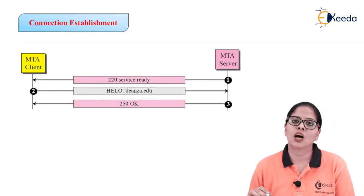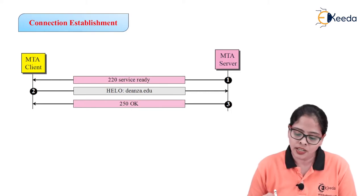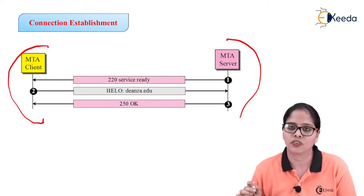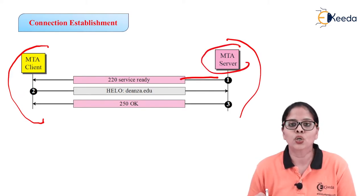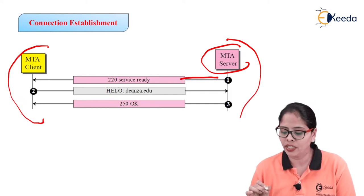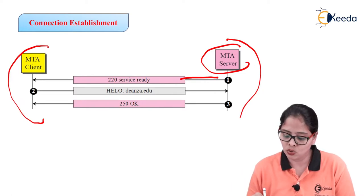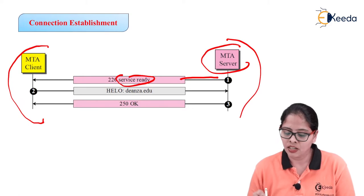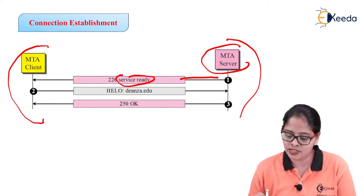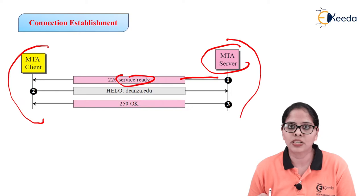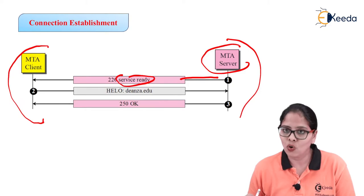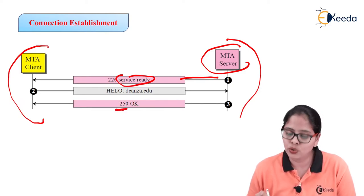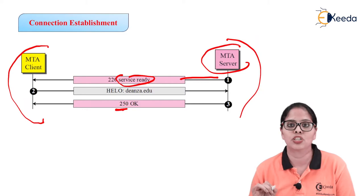Now let us discuss how the connection establishment is done between the MTA client and MTA server. First, the server sends message 220 — meaning service ready. Then the client sends the command HELO, which includes the sender address. For an OK, it sends the code 250. In this way, the connection establishment is done.